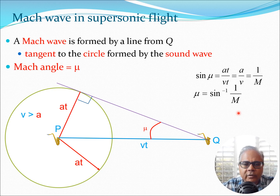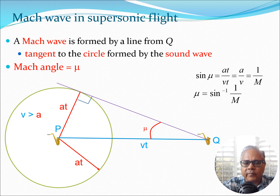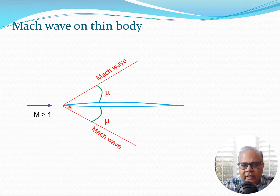So essentially, if you know the Mach number of the flow — the velocity and speed of sound — you can calculate the Mach number and immediately obtain the Mach angle, which is formed by the Mach wave given by the line from Q. This is the tangent to the circle formed by the sound wave. What happens is that if we take a typical thin body and put it in a flow taking place at a speed faster than the speed of sound, that is supersonic flow, we are going to get this kind of Mach wave formation, and these angles are going to be given by mu.